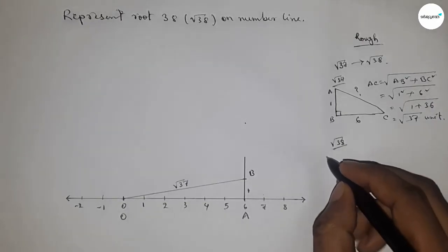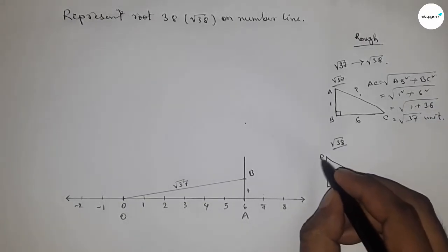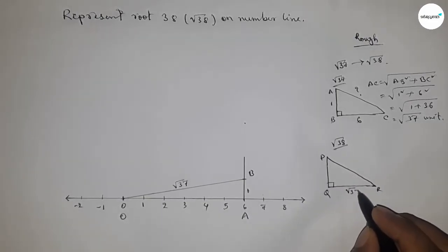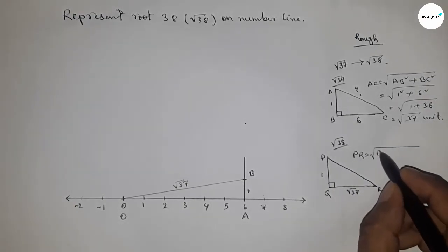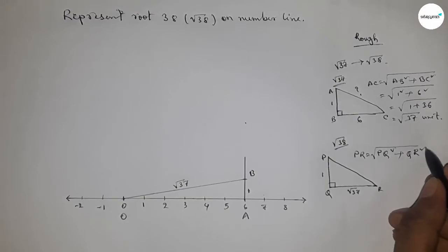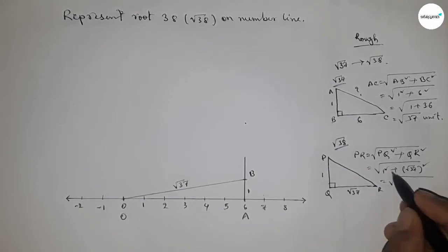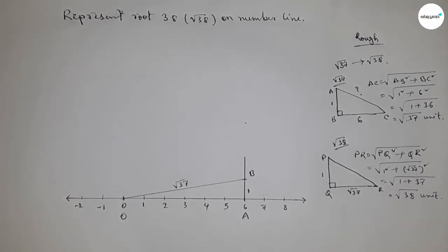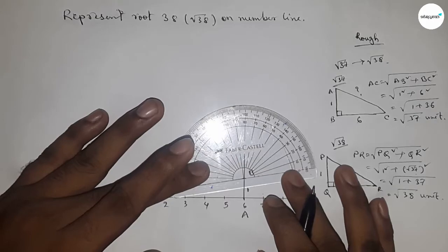Now for root 38: if there is a right angle triangle PQR with base root 37 units and height 1 unit, then hypotenuse equals root over (base squared plus height squared), which is root of (root 37 squared plus 1 squared), equal to root of (37 + 1), so the hypotenuse is root 38 units.